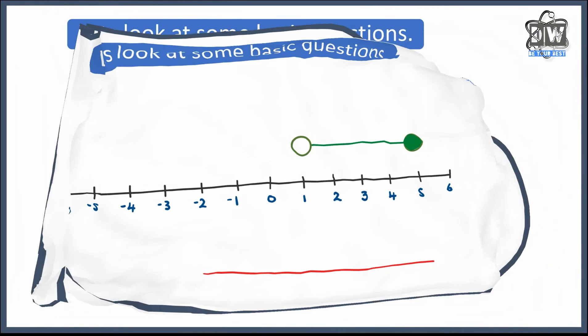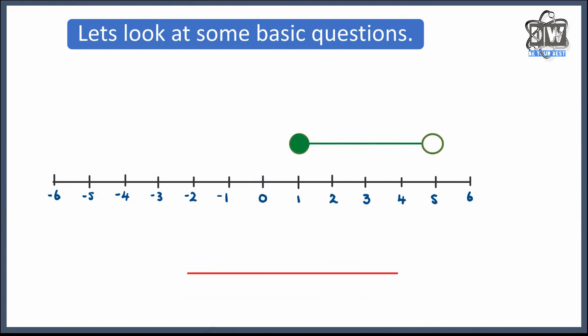Let's look at another one — you try and work it out, then come back and see if you're correct. On this one we've got 1 on the left and 5 on the right with x in between. We know x is bigger than 1, and because that circle is shaded in, it's bigger than or equal to 1. But it's smaller than 5 — because that circle is not shaded in, it must be smaller than 5, not equal to.